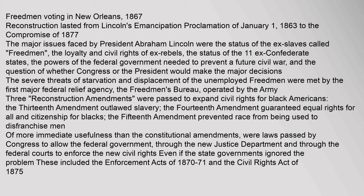The severe threats of starvation and displacement of the unemployed freedmen were met by the first major federal relief agency, the Freedmen's Bureau, operated by the Army. Three amendments were passed to expand civil rights for black Americans: the Thirteenth Amendment outlawed slavery, the Fourteenth Amendment guaranteed equal rights and citizenship for blacks, and the Fifteenth Amendment prevented race from being used to disenfranchise men. More immediate were laws passed by Congress including the Enforcement Acts of 1870–71 and the Civil Rights Act of 1875.